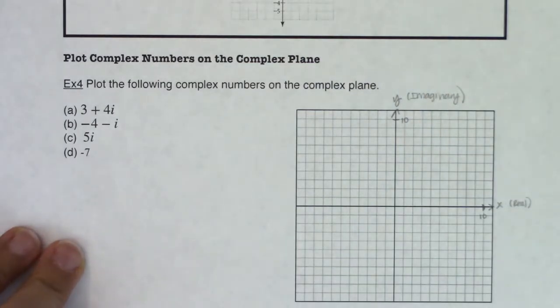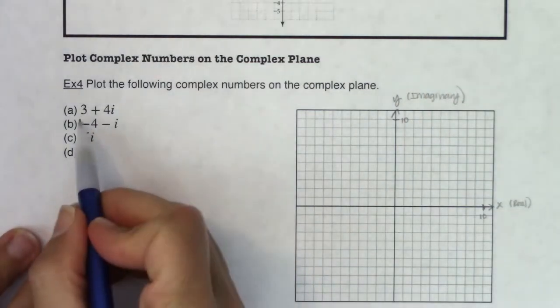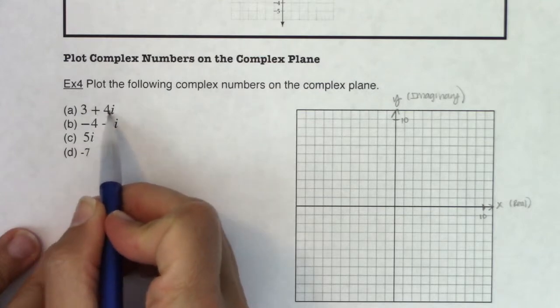Alright, so I just want to remind you this is our real axis and this is our imaginary axis. Okay, and that's how we work the complex plane. So here, when I take a look at 3 plus 4i, you can see the real part of this complex number is positive 3.